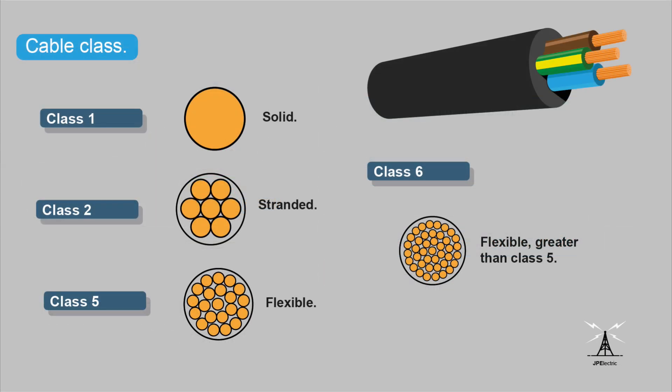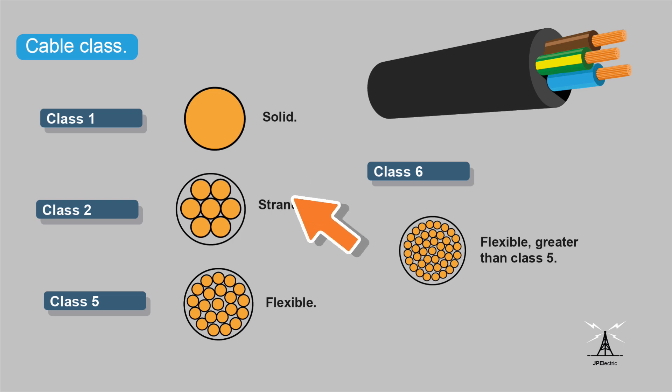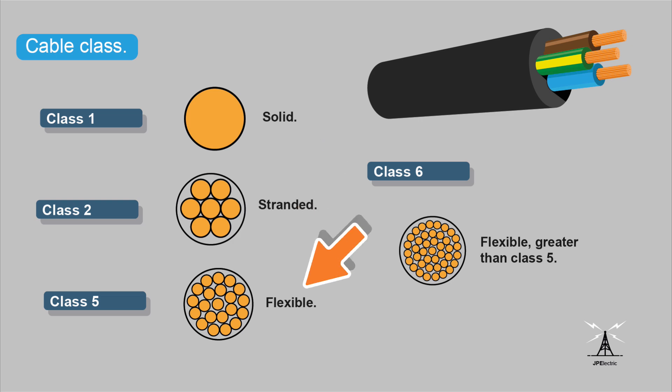Just a little bit more on cable class: class 1 is solid, class 2 is stranded, class 5 is flexible — that's what we've been looking at — and class 6 is flexible, greater than class 5.